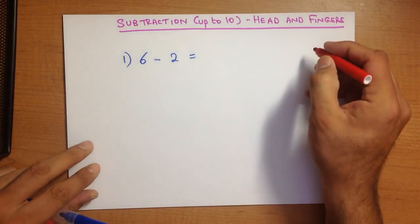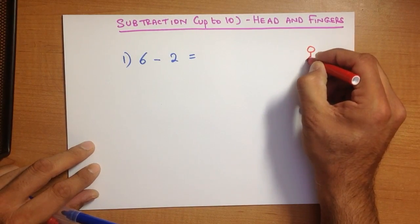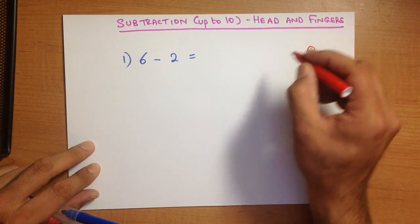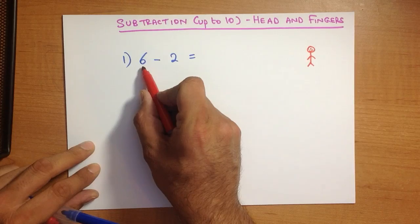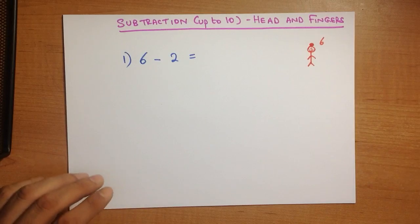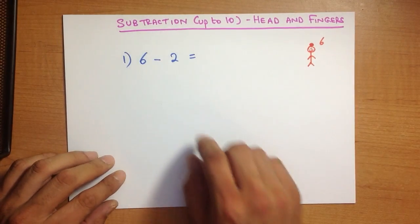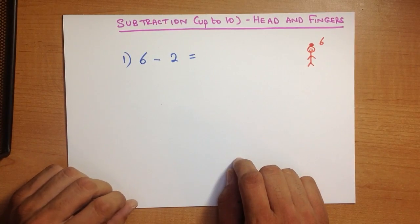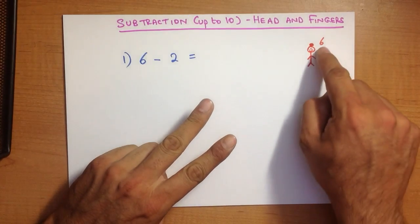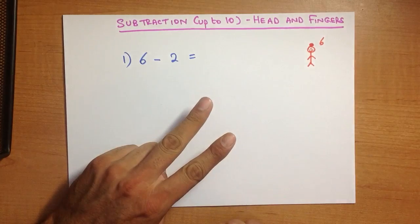So let's pretend this is me. I'm going to say there is 6 on my head. The second number, I'm going to say there is 2 in my hand: 1, 2. There is 6 on my head and 2 is in my hand.